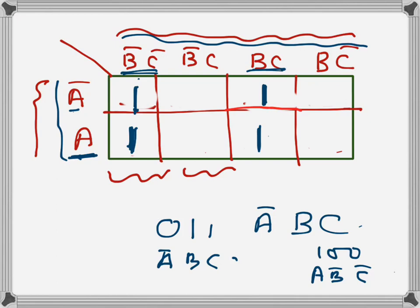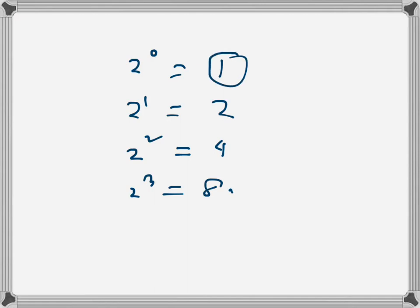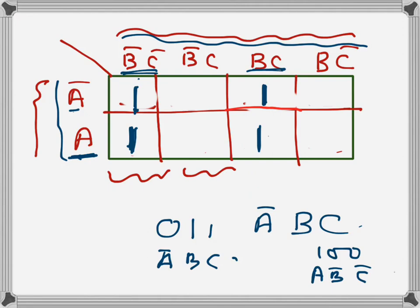Now we form groups. Groups must consist of adjacent ones, and the size of each group must be a power of two: either 1, 2, 4, or 8. Since this is a three-variable K-map the maximum is eight cells. We look for adjacent ones — these two are adjacent and can form a group, while those two are not adjacent, so they cannot.